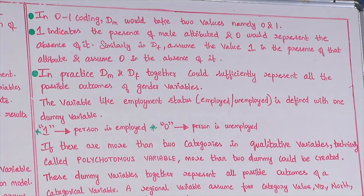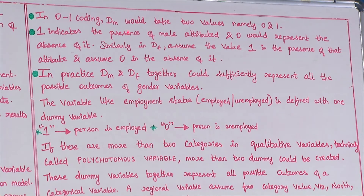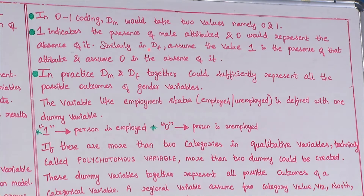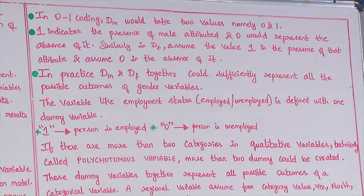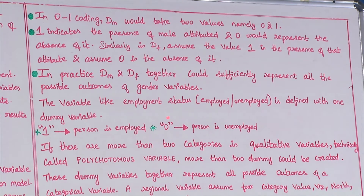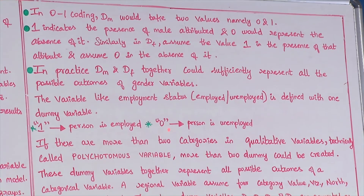In 0-1 coding, dm — the dummy for male — would take two values: 0 and 1. The value 1 indicates the presence of the male attribute and 0 represents its absence. Similarly, df assumes value 1 in the presence of the female attribute and 0 in its absence. In practice, dm and df together can sufficiently represent all possible outcomes of the gender variable. The variable for employment status could also be defined this way: 1 would indicate the person is employed and 0 would indicate the person is unemployed.